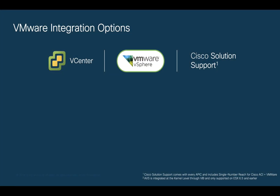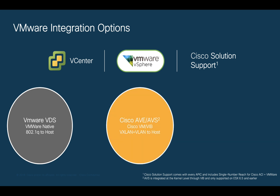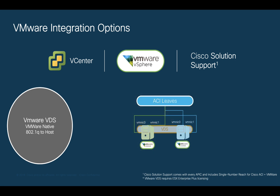Let's start by learning how to integrate VMware environments to ACI. There are two options we can use. One, using VMware's vSphere Distributed Switch, or VDS, which is a VMware native networking switch. Or two, using Cisco ACI Virtual Edge, or AVE. The first one uses VMware VDS, which is a traditional Layer 2 virtual switch that maps 802.1Q VLANs to port groups. You don't need to install anything special in VMware for this to work, as it fully leverages VMware's APIs.